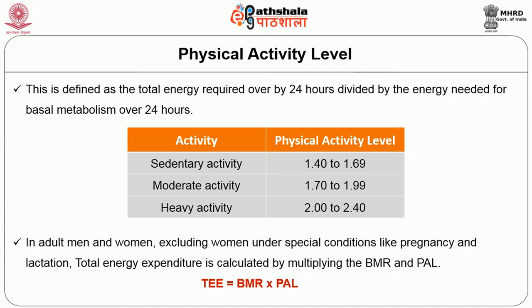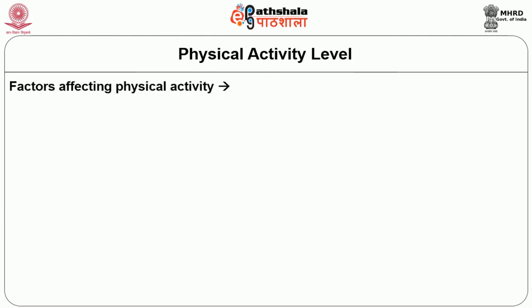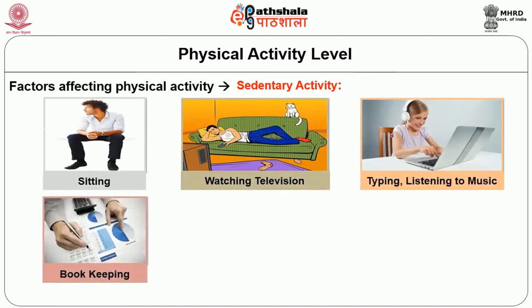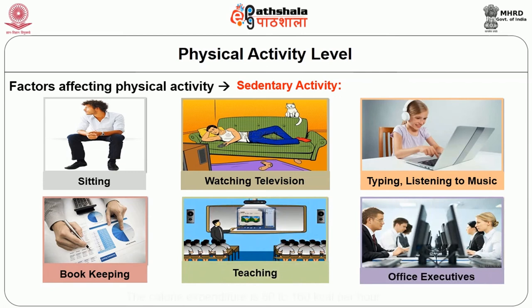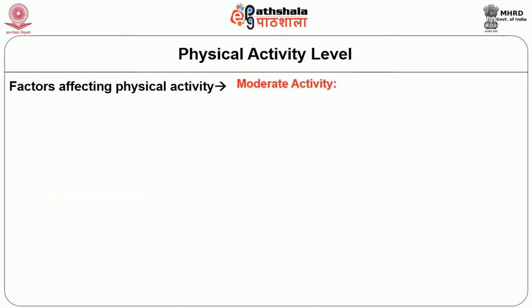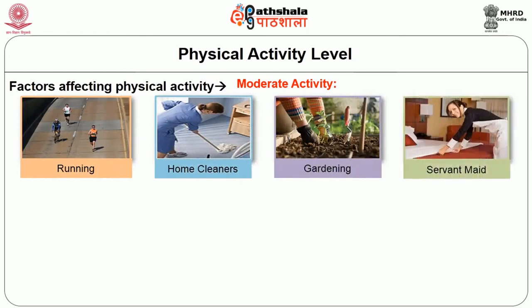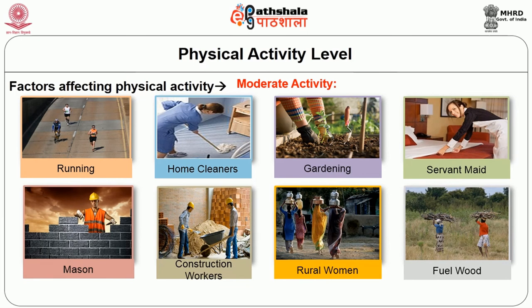Factors affecting physical activity: Sedentary activity — people who spend time sitting, watching television, typing, listening to music, using computers, bookkeeping, teaching, or in office roles do not demand much physical activity. Calorie expenditure is 80–160 kilocalories per hour. Moderate activity — people engaged in running, jogging, cycling, home cleaning, nursing, gardening, masonry, construction work, or rural women who walk long distances to fetch water and fuel wood expend more energy than sedentary activity but not strenuous. Calorie expenditure is 170–240 kilocalories per hour.